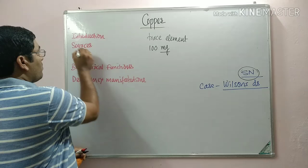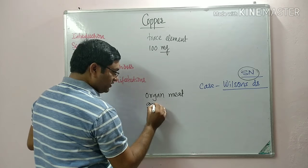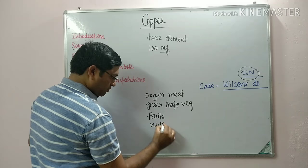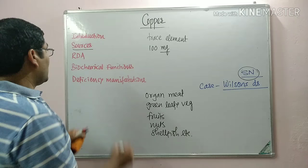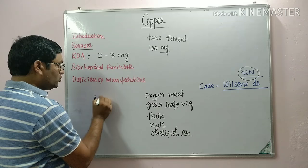Sources of copper include organ meat, green leafy vegetables, fruits, nuts, and shellfish. The RDA for copper is 2 to 3 milligrams per day. In the case of infants and children, it is 0.5 to 2 milligrams per day.